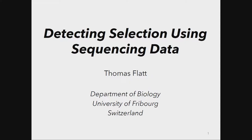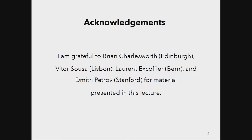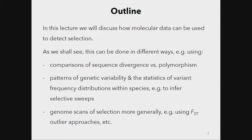Those lectures mainly talk about this for the haploid and diploid case, and what happens with recessive or dominant beneficial alleles. So I'm going to skip over that. Today we will talk about how we can use what we've discussed to detect selection using sequencing data. That's obviously not the only approach — we can study selection by looking at phenotypes — but population geneticists are interested in the underlying genetics, and the question is how we can use genetic data to infer selection.